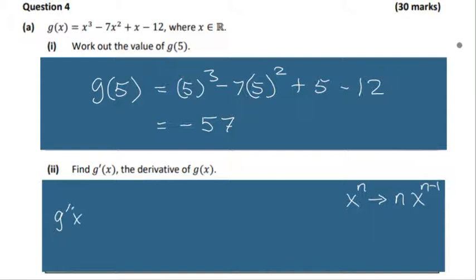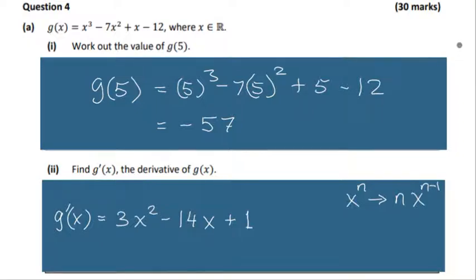So g dash of x is equal to: x cubed becomes 3x squared; minus 7x squared becomes minus 14x; and plus x is plus 1x, so remember if we have a number with the x, we just have the number remaining, giving us plus 1. The minus 12 is a constant, therefore its differential will be 0. And that's g dash of x.